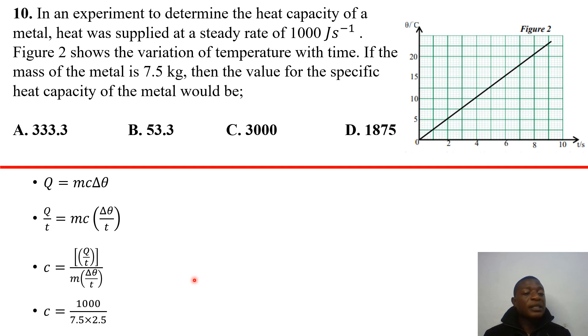So you realize that if you make C the subject, you will just have 1000 joules per second because it's the rate at which this heat is applied. And then you divide by M, M is 7.5. And then our delta theta over T is just the slope. So if you look at this here, you realize that you have five here corresponding to two. So change in Y by change in X, this will be 5 over 2, which gives you 2.5. So if you plug in that, that gives you 53.3 joules per kilogram per Kelvin. And our answer is A.